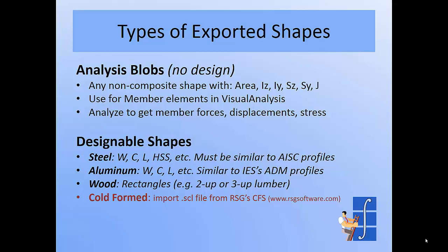Now that we've seen how easy it is, let's talk about some of the nuances. You can export all kinds of shapes from Shape Builder as long as they're non-composite, and with those shapes you can get analysis in Visual Analysis and a pretty picture in the picture view. But if you want design checks, you have to limit yourself to the three main categories: steel shapes, aluminum shapes, and wood shapes that fit within the existing profiles in our database. If you want to use cold form shapes, you have to use the third-party RSG CFS tool, which is described more in the help file.